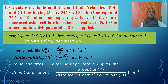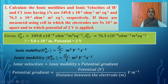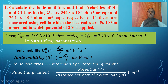The problem is: calculate the ionic mobilities and ionic velocities of H⁺ and Cl⁻ ions having equivalent conductance at infinite dilutions of 349.8 × 10⁻⁴ per ohm·meter² per equivalent and 76.3 × 10⁻⁴ per ohm·meter² per equivalent respectively, measured using a cell in which the electrodes are 5.0 × 10⁻² meter apart and to which a potential of 2 volts is applied.